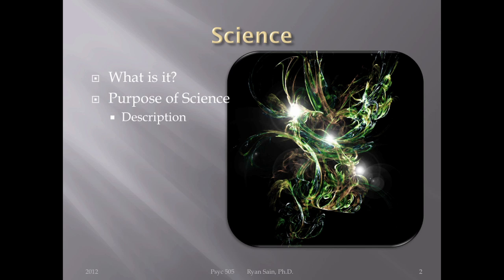The purposes of science are pretty straightforward. First, description — let's describe these phenomena in general. Second, prediction — when are they going to happen, how, and under what conditions? Third, control — can we control these phenomena and when will they happen? When you put all three of these things together, basically we have an explanation for the phenomenon in question.